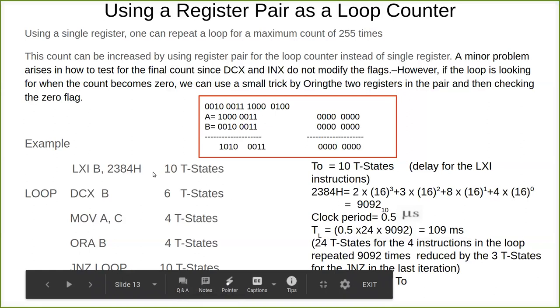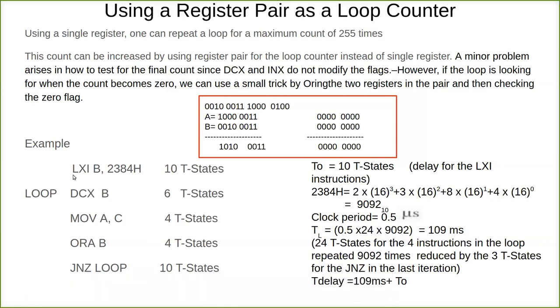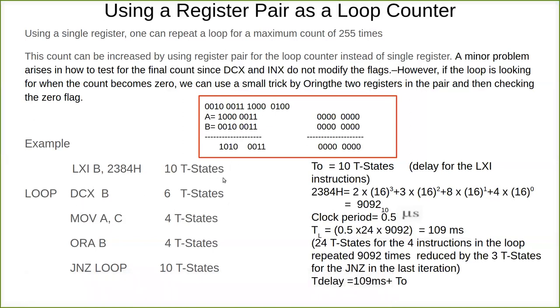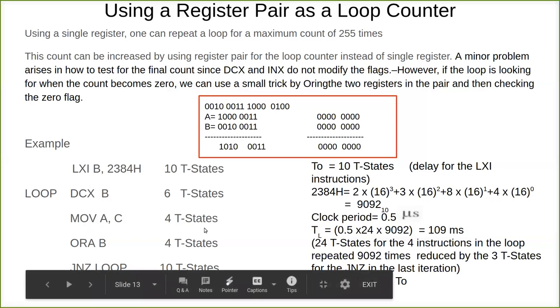Now we will see the T-states. Naturally this is a 3-byte instruction and it is executed for 10 T-states. It requires 4 machine cycles. Then DCX B is 6 T-states, and since it is a register pair, we need 6 T-states. Then MOV A, C is a single byte, it is 4 T-states. Then ORA B also is 4 T-states and jump on zero is 10 or 7 because the last one will be only for 7 T-states.